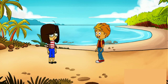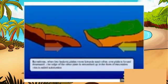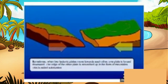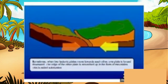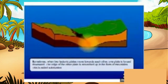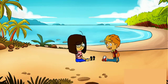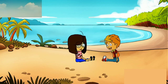Folded mountains are formed when two or more tectonic plates are pushed or collide with each other. Himalayas are a good example of a folded mountain. Am I right?